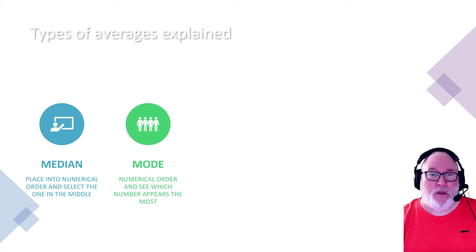The mode. Again, put them into numerical order and take a look through that list. Whichever way you're going to do it. Take a look through the list and it's whichever number appears the most. That's your mode average.